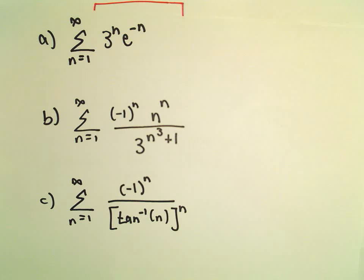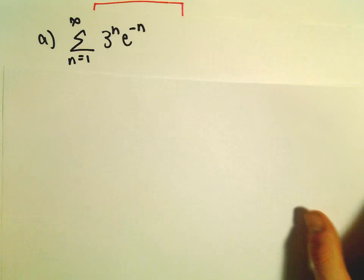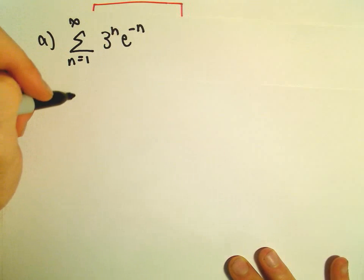So, just a few different examples here. We'll decide whether it converges or diverges. Part A here, we've got from 1 to infinity of 3 to the n, e to the negative n.